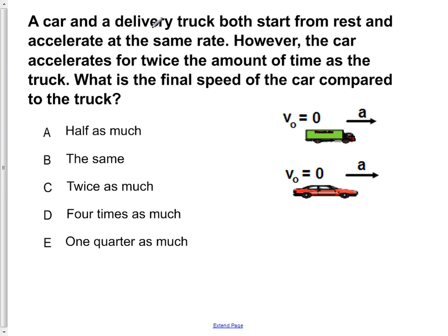So the first thing to do for this problem is to read through and determine your given information. We're told that both of them start from rest. So V0 is equal to 0 meters per second and V0 of the car is equal to 0 meters per second.